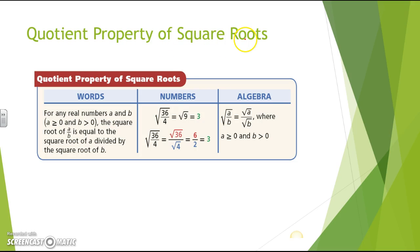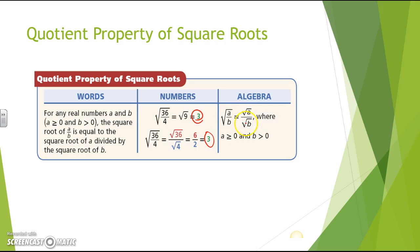You'll also see the quotient property of square roots. For any real numbers a and b, where a is greater than or equal to zero and b is greater than zero, the square root of a divided by b is equal to the square root of a divided by the square root of b. For example, the square root of 36 divided by 4: 36 divided by 4 gives 9, so the square root of 9 equals 3. Alternatively, the square root of 36 is 6, the square root of 4 is 2, and 6 divided by 2 gives 3.